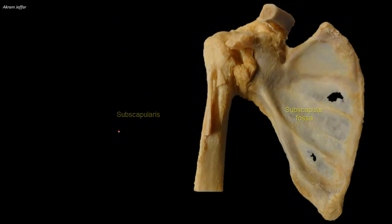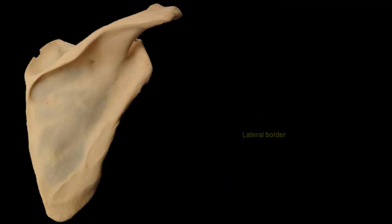The triangular body of the scapula is thin and translucent, although its borders, especially the lateral one, are somewhat thicker. The spine continues laterally as the flat expanded acromion.